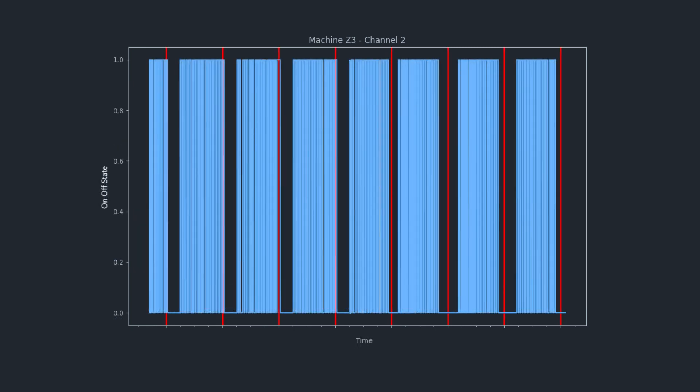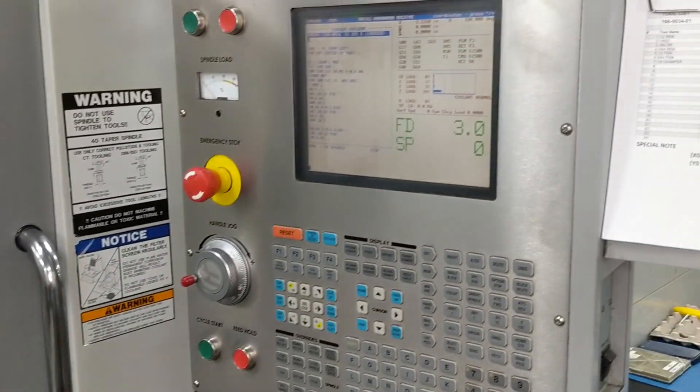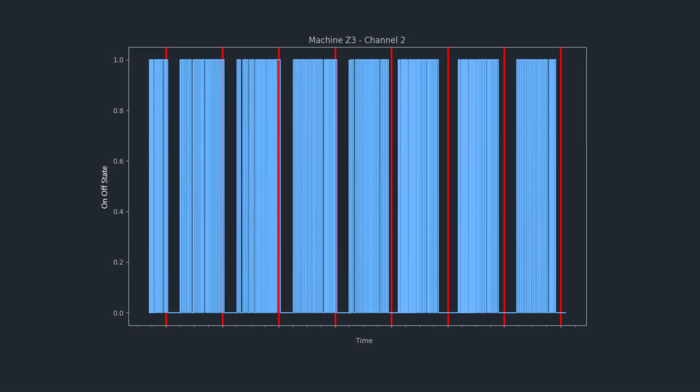The Python script then sorts the vibration data into three regions: machine time, downtime, or off time. Machine time indicates when the machine is running during operational hours. Downtime indicates when the machine is not running during operational hours. And off time indicates non-operational hours.